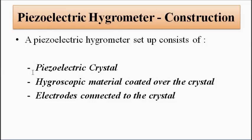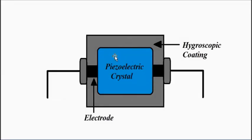We will have the piezoelectric crystal, and then we will have some hygroscopic material coated over the crystal. Hygroscopic materials are those which allow moisture to pass through them. We will also have the measuring electrodes connected to the crystal, along with lead wires so that it can be connected to further signal conditioning circuitry to give us an electrical output.